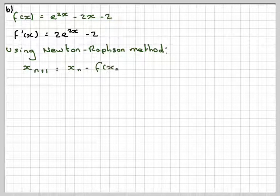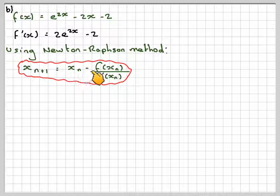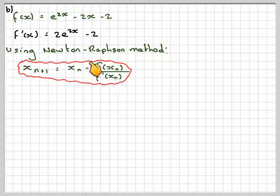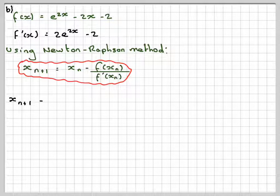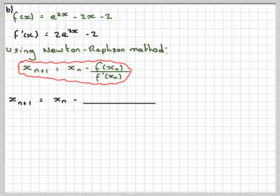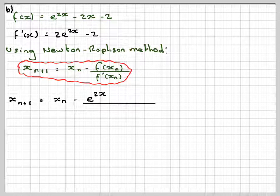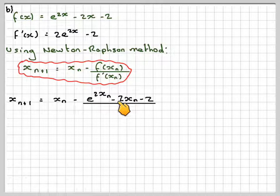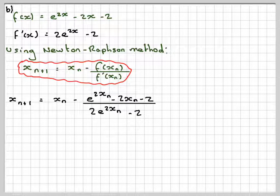Using the Newton-Raphson method, x to the n plus 1 is equal to x to the n minus f of x n over f dash of x n. So we substitute the values in. So x to the n plus 1 in our case will be x to the n, then we write e to the 2x to the n minus 2x to the n, make sure these are subscript minus 2. And underneath we write the derivative 2e to the 2x n minus 2.